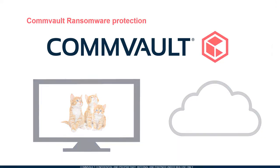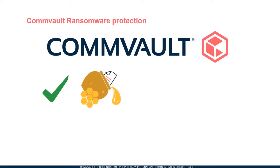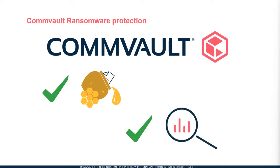Second, Commvault software can detect the presence of ransomware on your client computers by using two different checks. The first check uses the honeypot method, in which a file with a known signature is monitored for change. The second check detects anomalies in your file handling patterns — for example, an abnormal number of files being modified, renamed, created, or deleted.